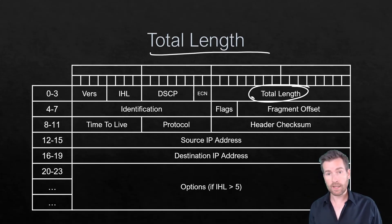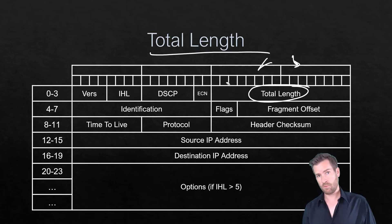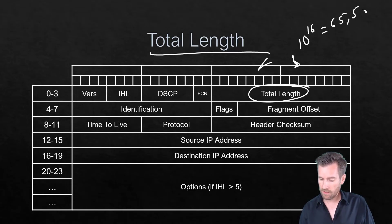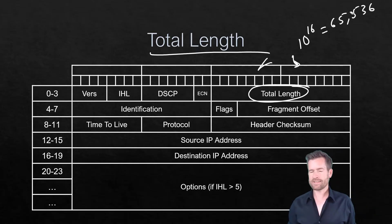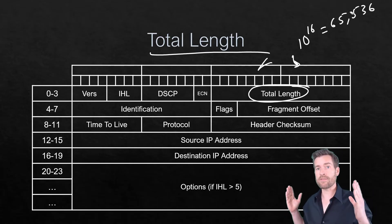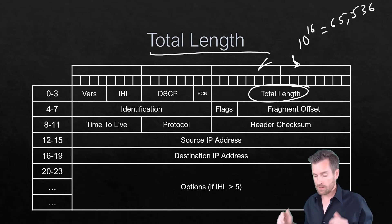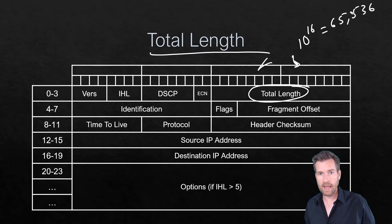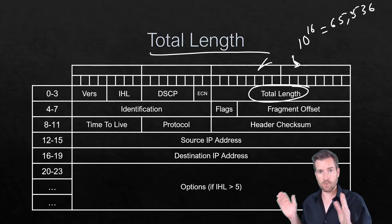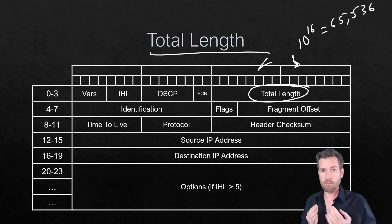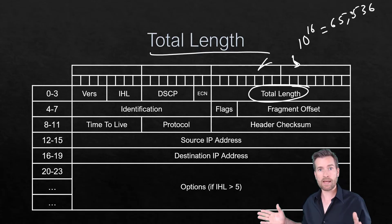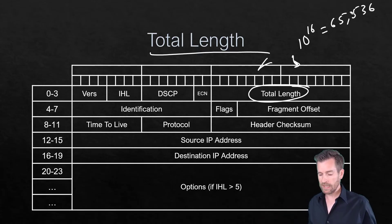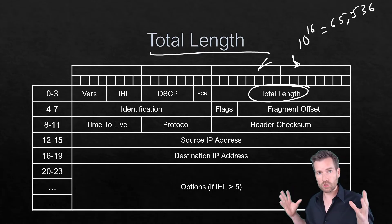Then we have the Total Length field — two octets, or 16 bits. That gives 65,536 different possibilities, meaning the total packet size (header plus payload) could theoretically be up to 65,536 bytes. In practice, most equipment can't handle packets that large due to the maximum transmission unit, but IP version 4 supports larger packets if the equipment can handle them.